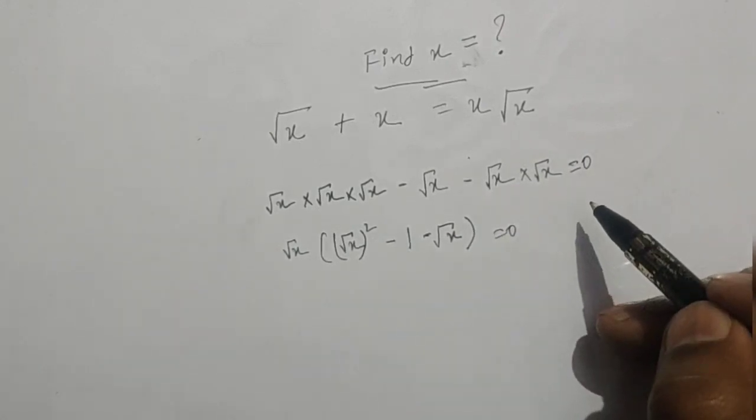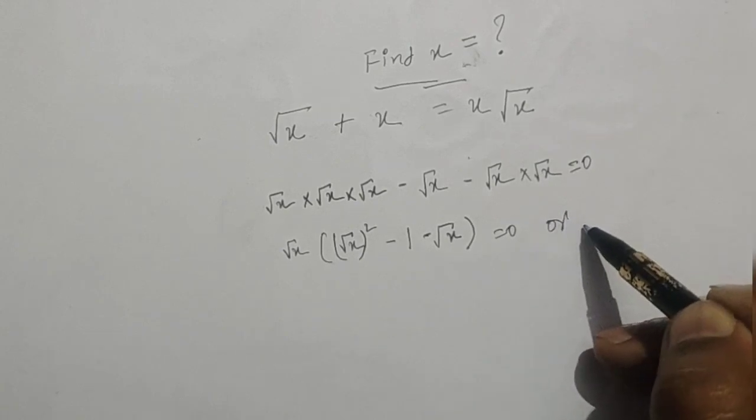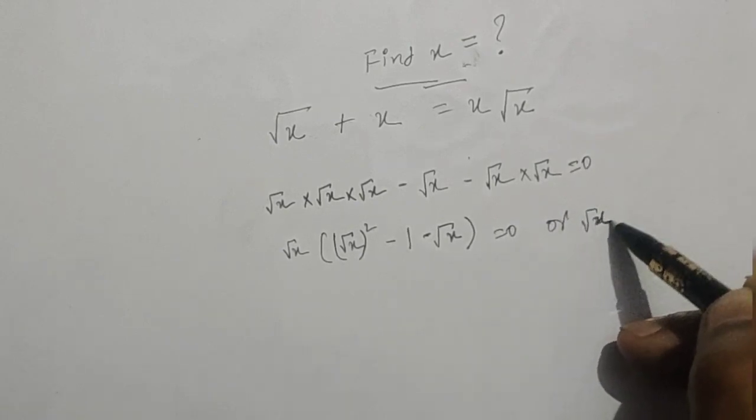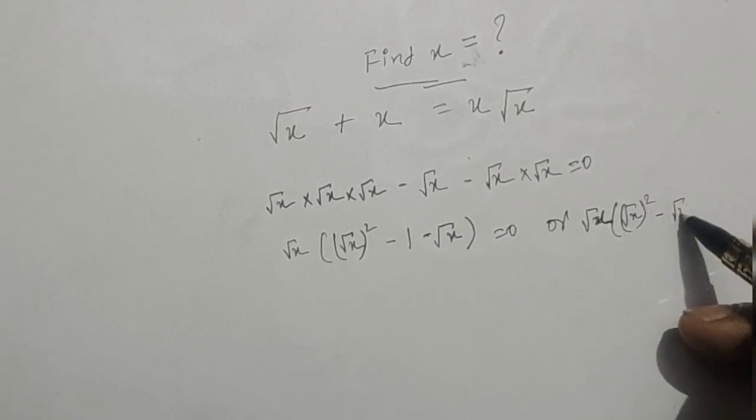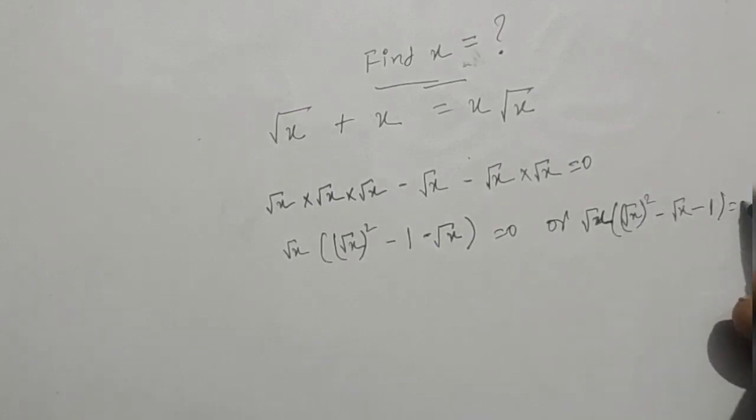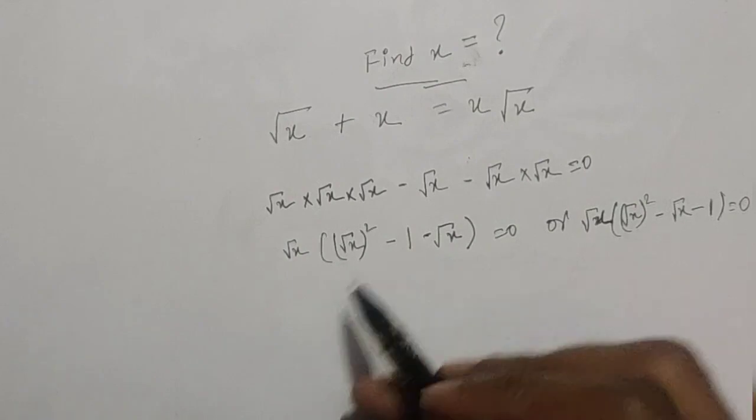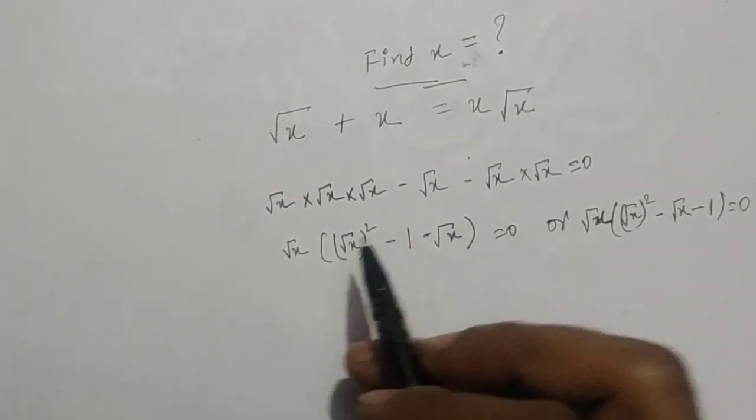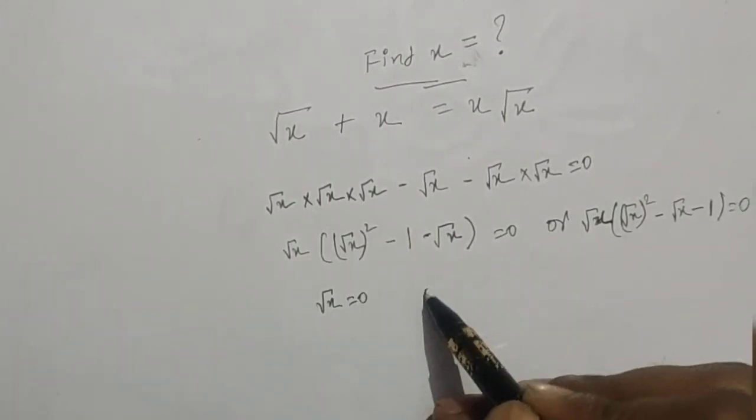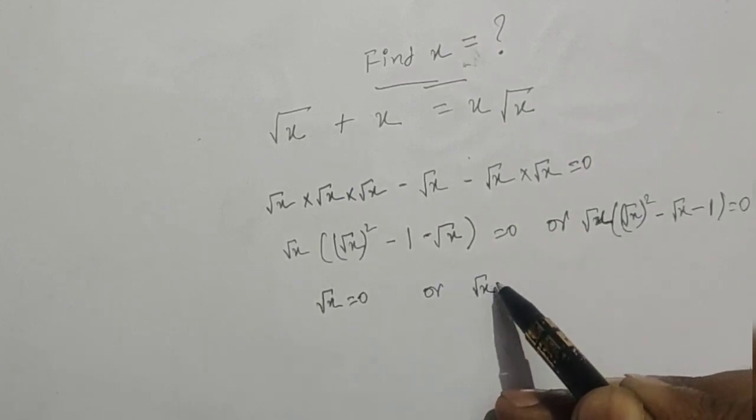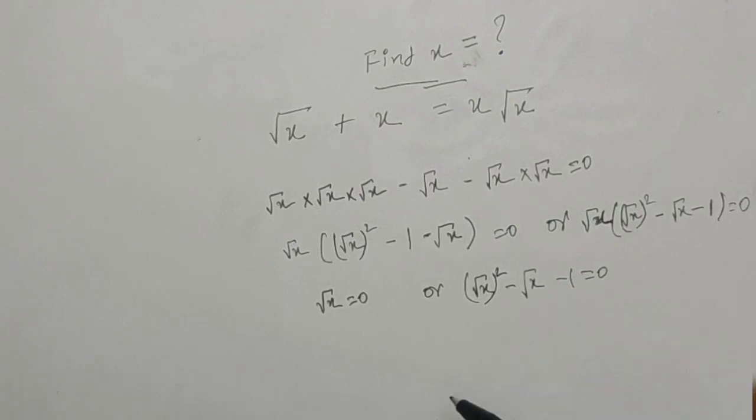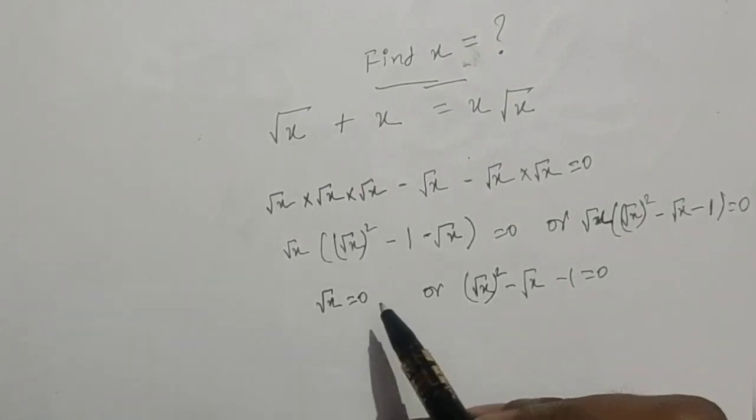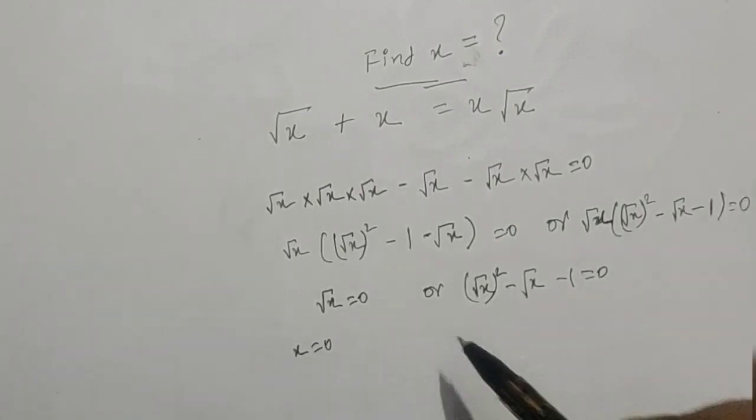Or we can write this as root x times (root x squared minus root x minus 1) equals 0. So from here we can say that root x equals 0, or root x squared minus root x minus 1 equals 0. So root x equals 0, which means x must be equals to 0.